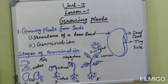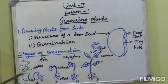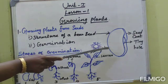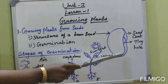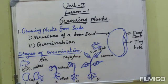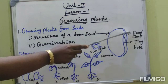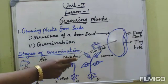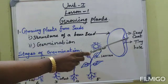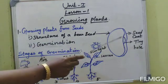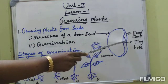In this lesson the bean seed is given as an example for growing plants from seed. First, see the structure of a bean seed. The outermost covering of the seed is called a seed coat. The seed coat protects the baby plant inside it. The seed coat has a tiny hole through which the seed gets water.